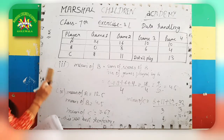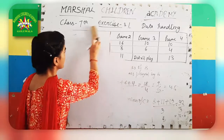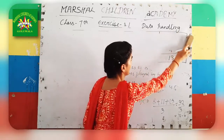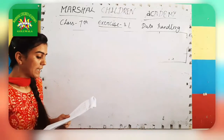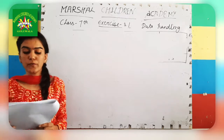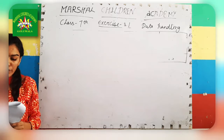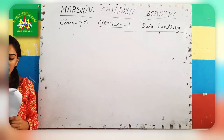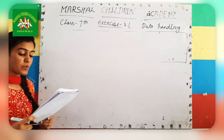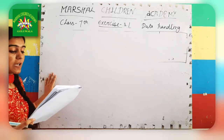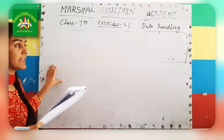Now question 6. The marks out of 100 obtained by a group of students in a science test are: 85, 76, 90, 85, 39, 48, 56, 95, 81, and 75. There are 3 sub-questions. Before answering them, we need to arrange all marks in ascending order.